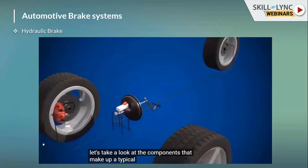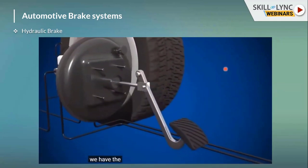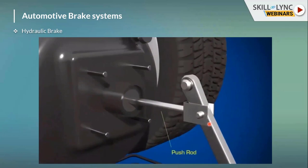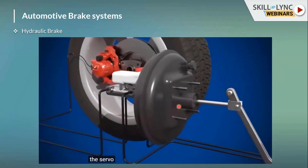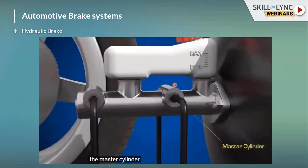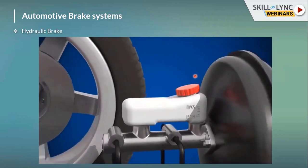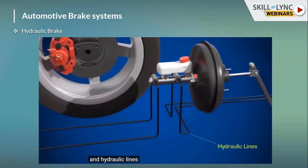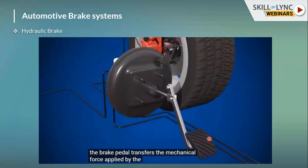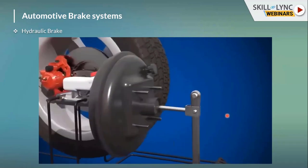Let me show you the video of how hydraulic brakes work while I explain. This is the hydraulic braking system — this is the brake pedal, this is the push rod coupled with the brake valve termed as a servo, which is used to build up the pressure. This is the master cylinder, and this is the reservoir used to fill up the brake fluid. These are the brake lines. When we apply the brake manually, it transfers our manual operation into hydraulic operation at the wheels.